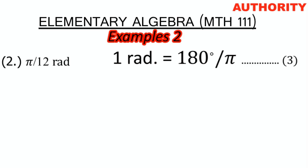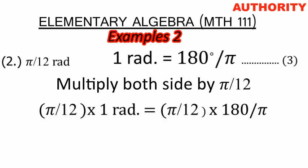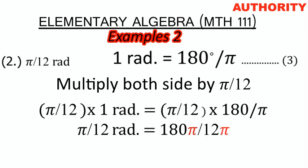After choosing the formula, the next step is to multiply both sides by the given angle. The given angle is π/12. So we multiply both sides by π/12. On the left-hand side we have π/12 radians. On the right-hand side we have 180 over π times π/12.